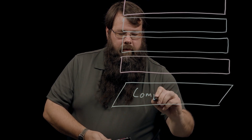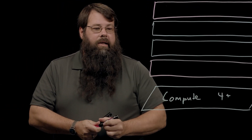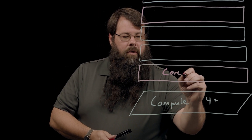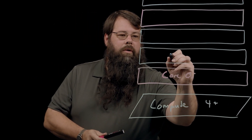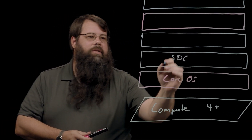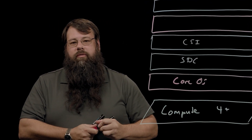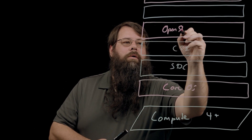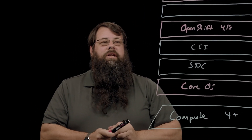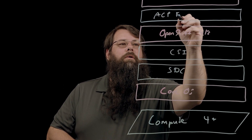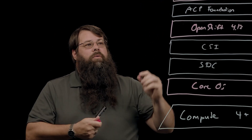We start with our compute cluster with four or more nodes. On top of that, we've got Red Hat Core OS. Then we layer on our Storage Data Client and our Container Storage Interface. Then we have OpenShift 4.13 and the ACP Foundation software. We'll talk more about that in a moment. On top of that, we have the OpenShift Web Console.